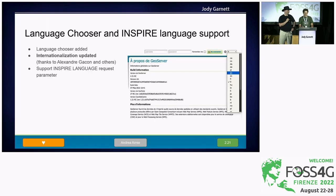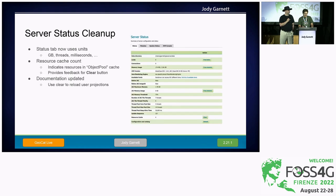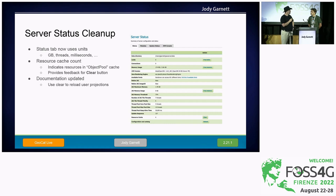In terms of configuration and setup, we now have a language chooser at the top right so you can switch language at runtime. Thanks to the efforts of Alexandre Gasson, we have much improved internationalization — he has updated most of the languages. We also have support for the INSPIRE language request parameters so you can switch the contents of your map, GetFeatureInfo, and capabilities to the language you desire. We also cleaned up the server status page a little, gave it actual units, and updated the documentation.